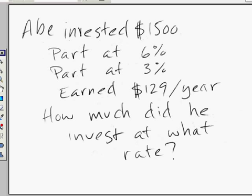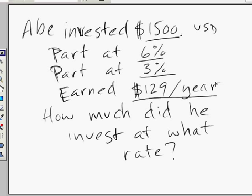Alright, we have an investor. His name is Abe. And Abe has invested $1,500. Part he invested at 6%. The other part he invested at 3%. And he earned a grand total of $129 per year. That's not a lot, but there it is.